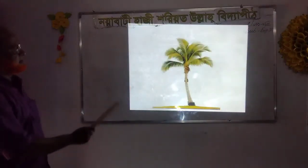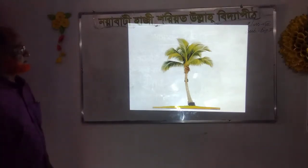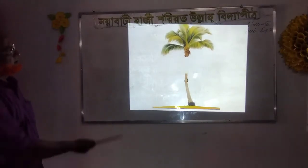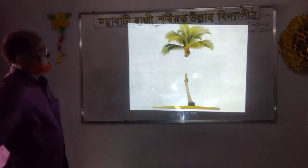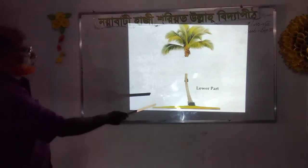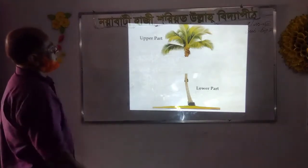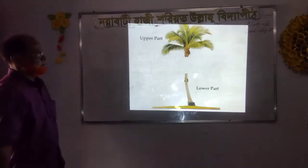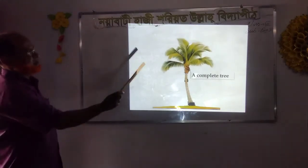Dear learners, look at the picture. What do you see in the picture? You can see there are two parts — this is the lower part and this is the upper part, and last of all a complete tree.